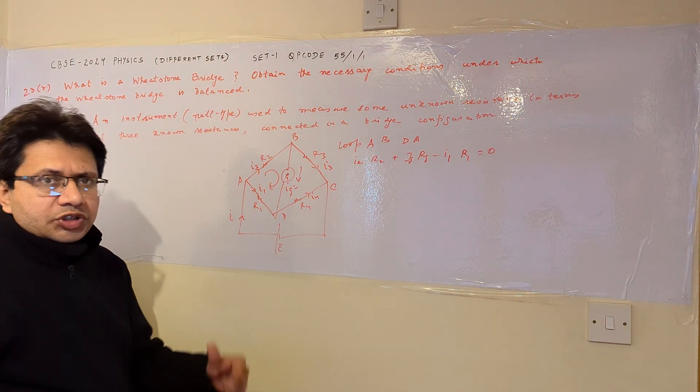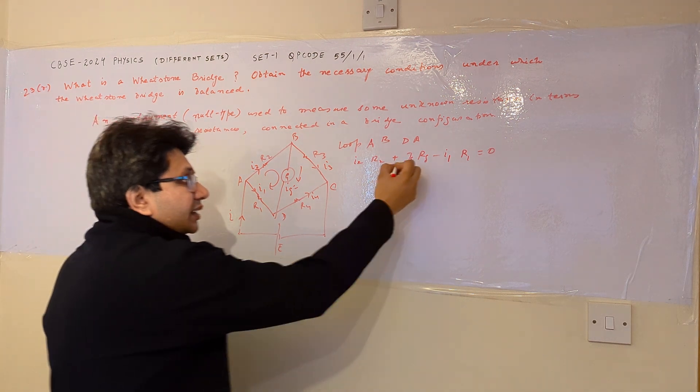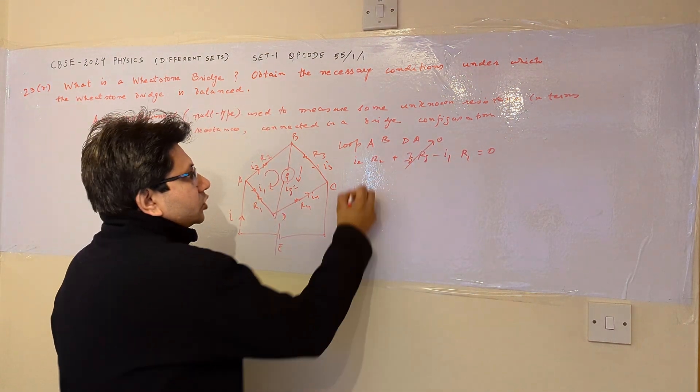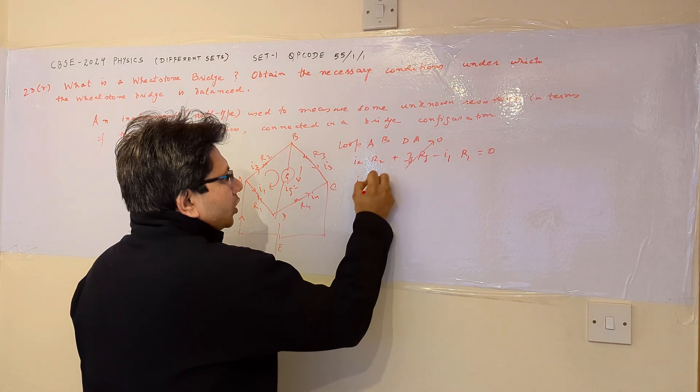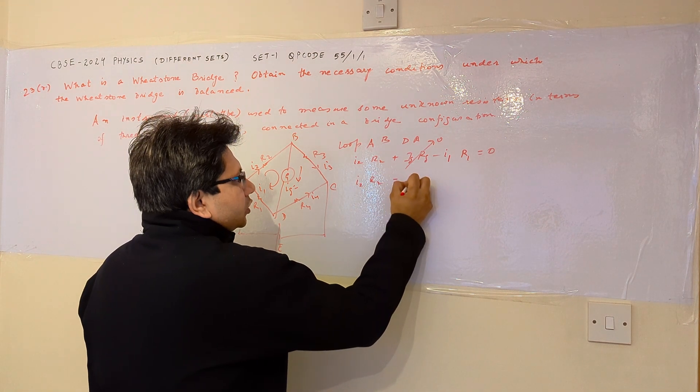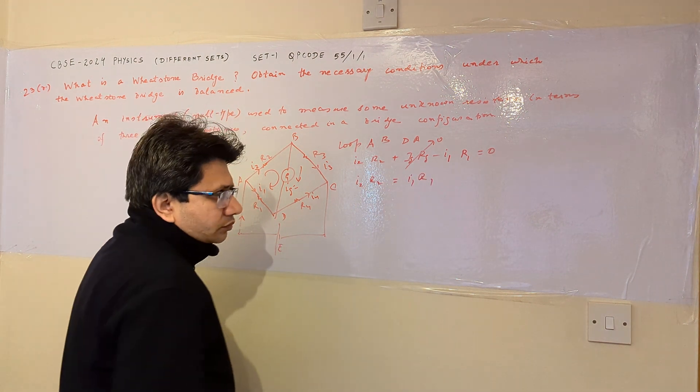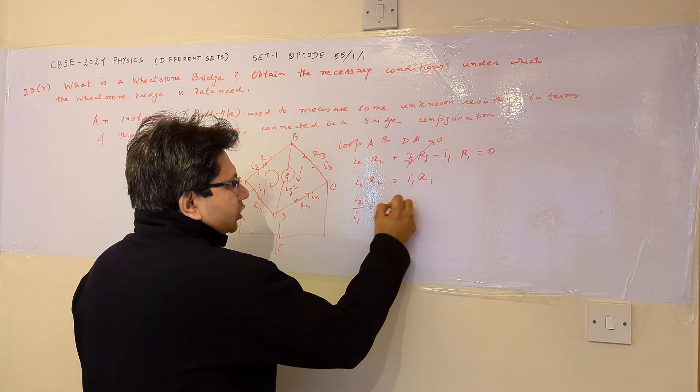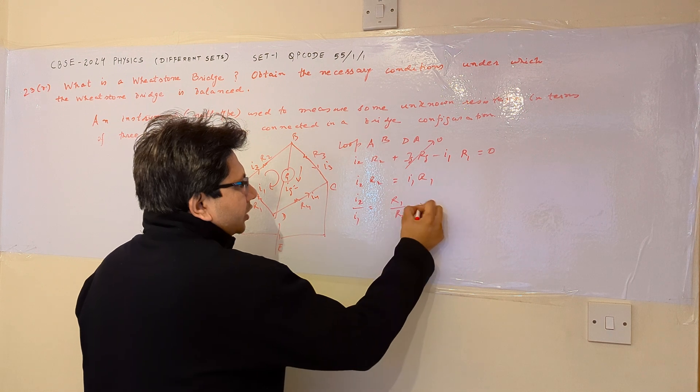So this is the first equation which we can simplify as ig zero in the balance condition. So we put it as zero. So we can say that I2 R2 is equal to I1 R1. Or we can say that I2 upon I1 is equal to R1 by R2.